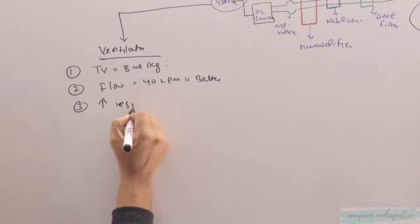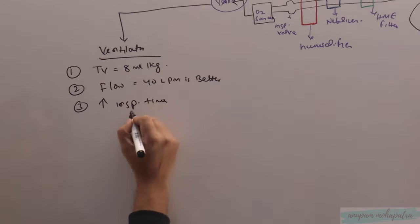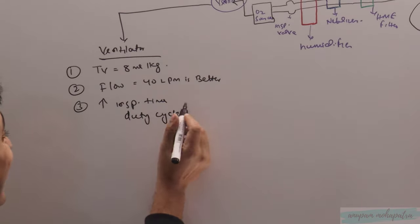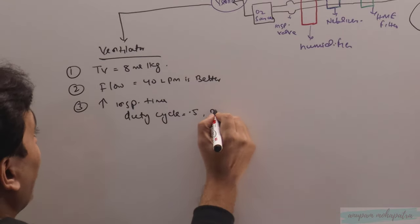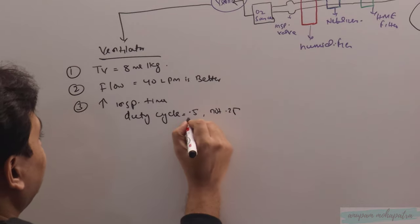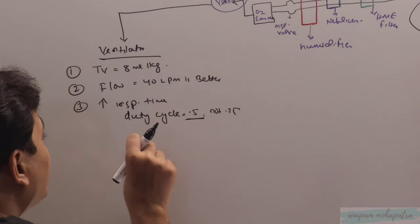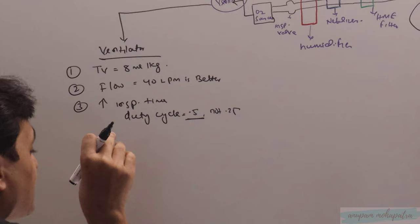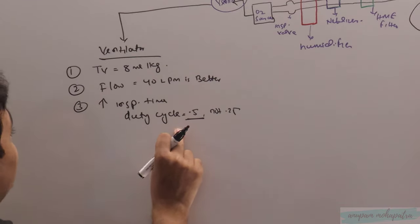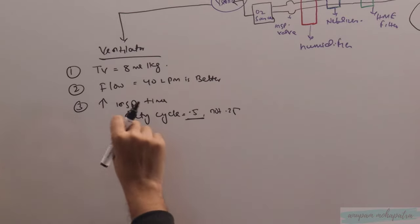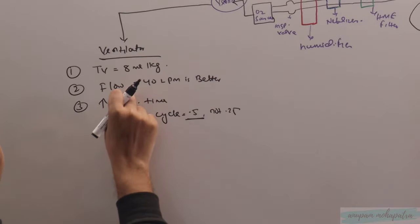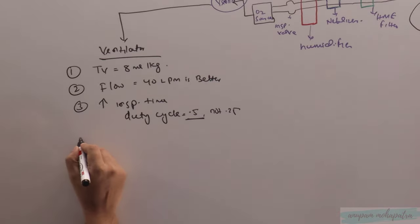Third, increase inspiratory time. Make sure the duty cycle - the time spent in inspiration - is at least 0.5, not 0.25. If the respiratory cycle is four seconds, two seconds should be inspiration and two seconds expiration. You have to increase the inspiratory time so that for a maximum amount of time the flow is delivered. Number four: square waveform.